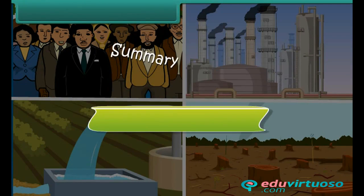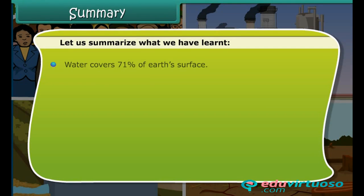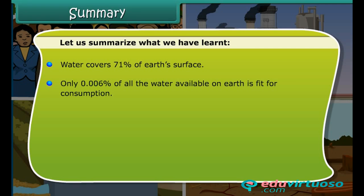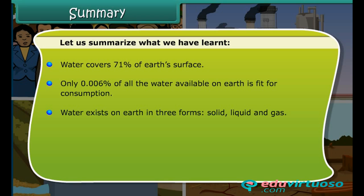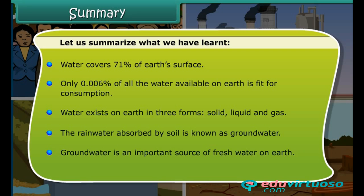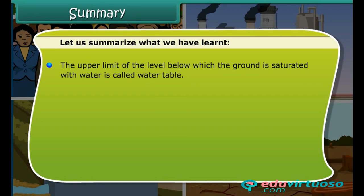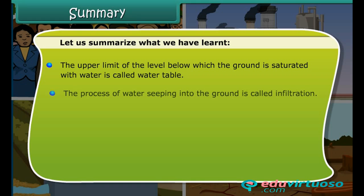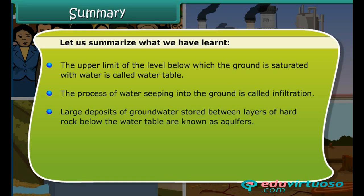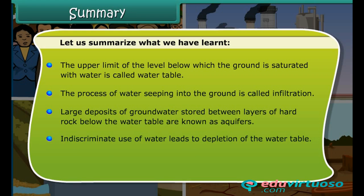Let us summarize what we have learned: Water covers 71% of Earth's surface. Only 0.006% of all the water available on Earth is fit for consumption. Water exists on Earth in three forms — solid, liquid, and gas. Rainwater absorbed by soil is known as groundwater, which is an important source of fresh water. The upper limit of the saturated ground level is called the water table. The process of water seeping into the ground is called infiltration. Large deposits of groundwater stored between layers of hard rock below the water table are known as aquifers. Indiscriminate use of water leads to depletion of the water table.